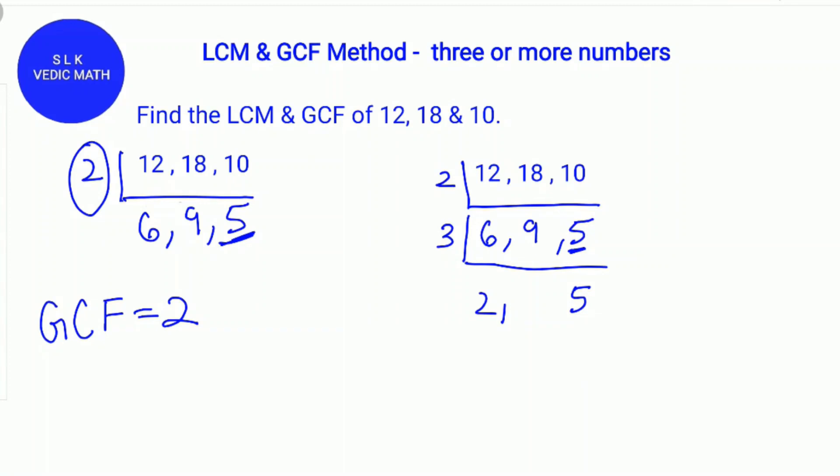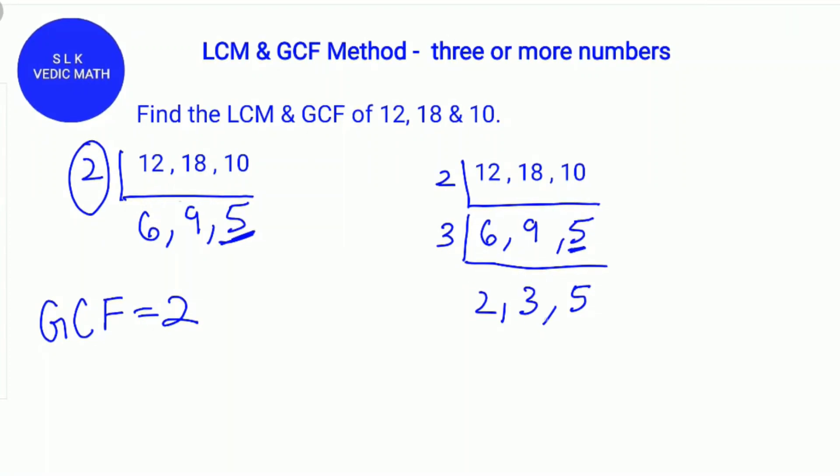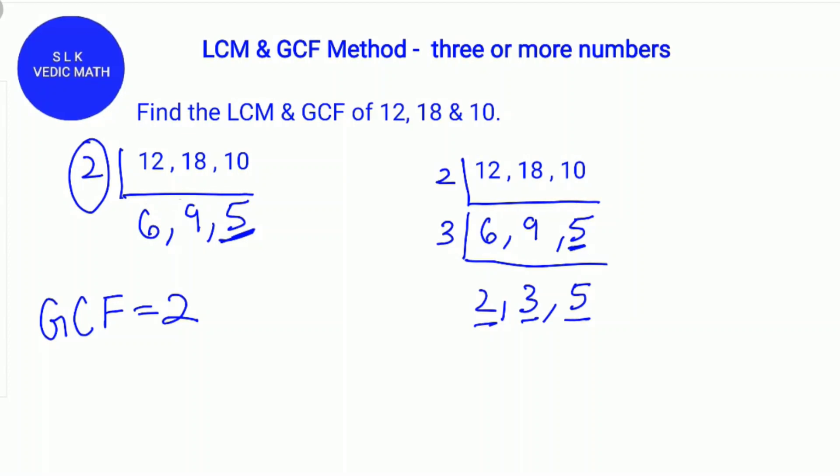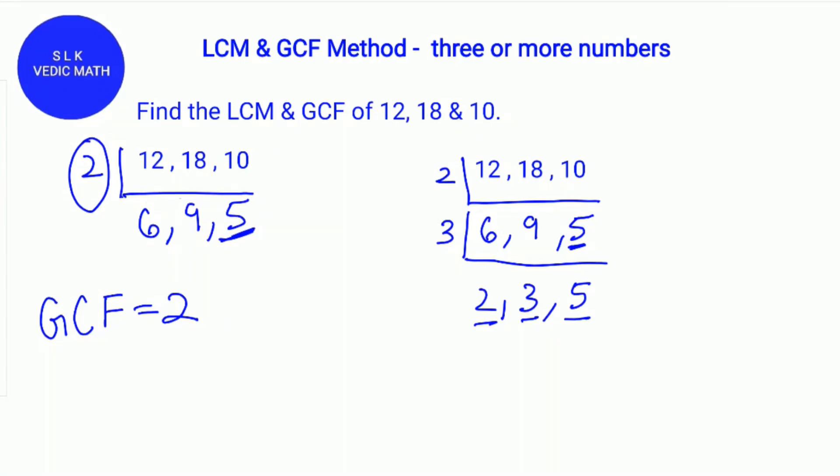Next, 3 times what is 9? 3 times 3 is 9. Since 2, 3, and 5 are all prime numbers, there are no more common factors. So, we stop here.